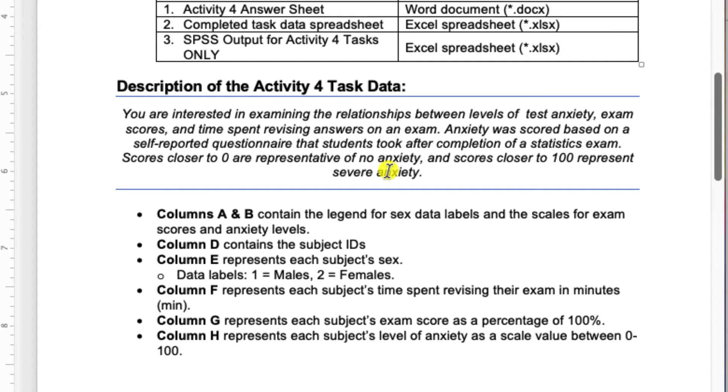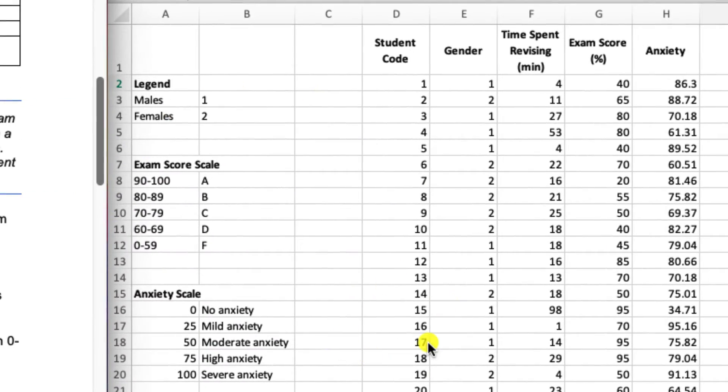Scores closer to zero are representative of no anxiety, and scores closer to 100 represent severe anxiety. I've put a description of what the data entail by column. You can also see in the spreadsheet over here, we have a legend for our sex variable.